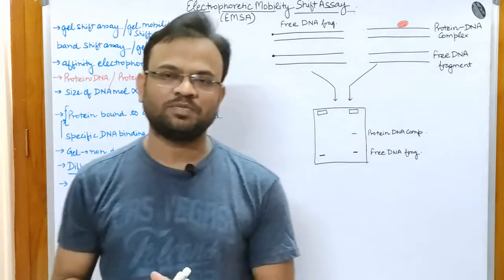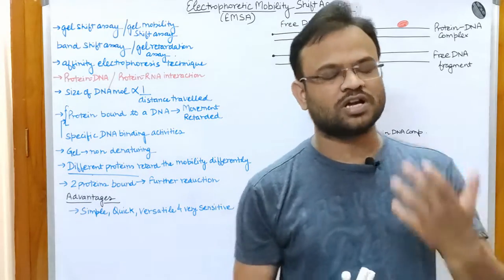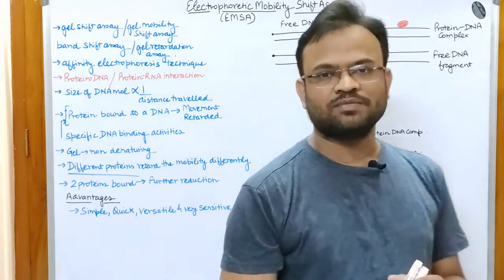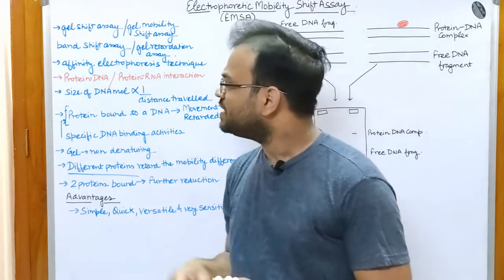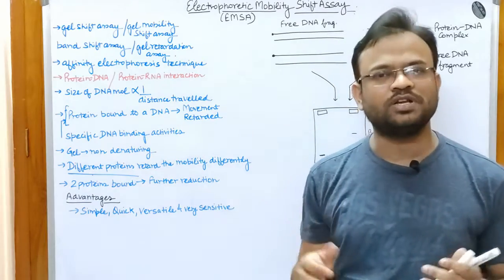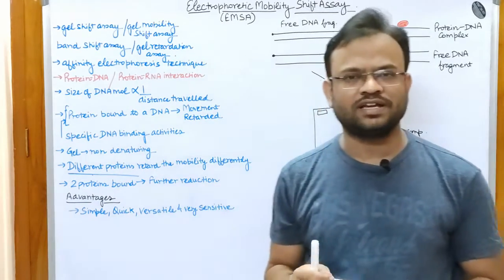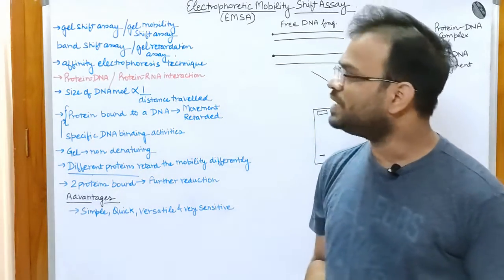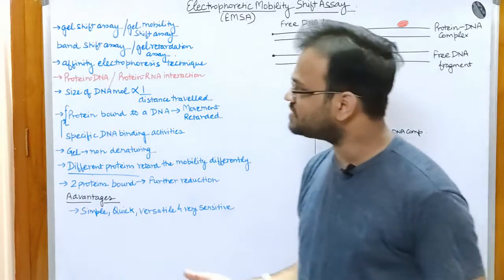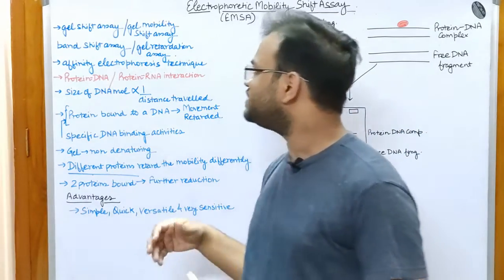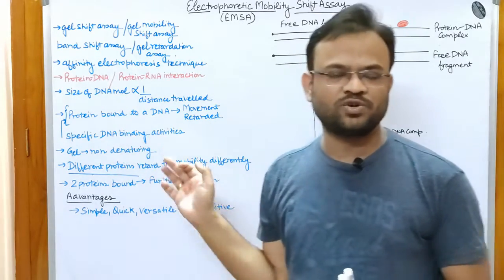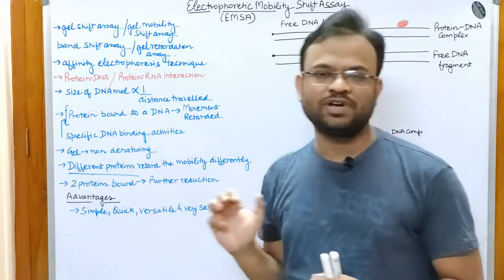This is a very popular technique used in most labs. We will be talking about the principle of this technique and also how it is done. You should know the other names of this technique: gel shift assay, gel mobility shift assay, band shift assay, and gel retardation assay. You will come to understand why names involving gel, bands, and electrophoresis are associated with this technique as we proceed.